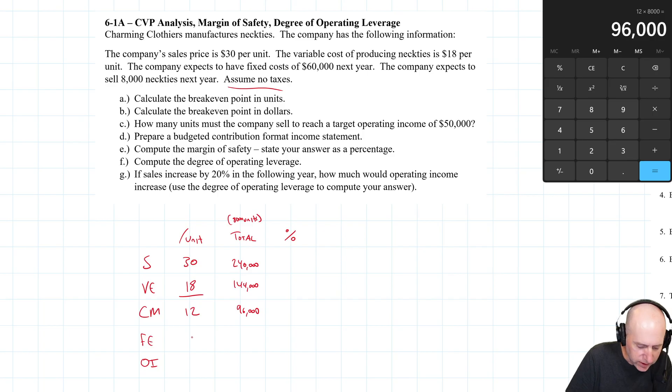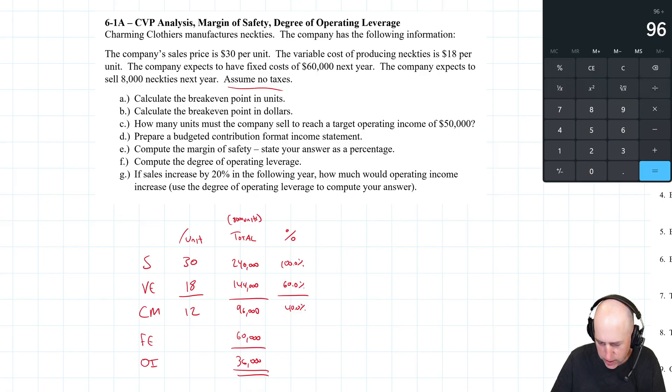Now you'll notice I didn't do fixed expenses or operating income per unit. We do not need to do this, but we absolutely do need to do it for totals. Our fixed expenses are $60,000, and therefore our operating income is $36,000. And as percentages, we just state the top three items as a percentage of sales. So sales is of course 100%, variable expenses, 144 divided by 240, 60%. And therefore our contribution margin is going to be 40%. We can just double check that, 96 divided by 240, yes it's 40%.